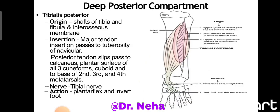Tibialis posterior arises from the shaft of the tibia, fibula, and the interosseous membrane between them. The major portion inserts on the navicular tuberosity, and it also provides slips to the calcaneus, all three cuneiforms, the cuboid, and the bases of the second, third, and fourth metatarsals. The nerve supply is by the tibial nerve and the action is plantar flexion and inversion of the foot.